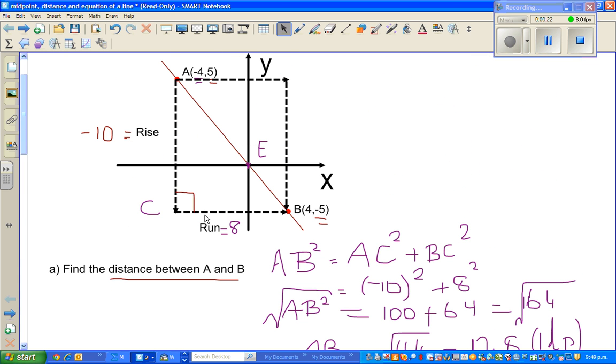The two points that you have is negative 4, 5, and the other point is 4, negative 5. This is your A and this is your B.